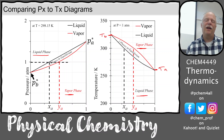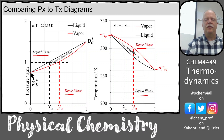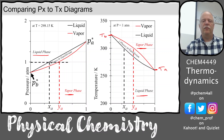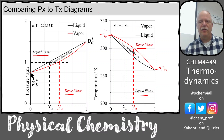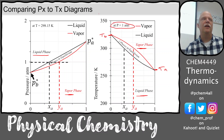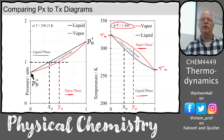I might really prefer the temperature-composition phase diagrams because they have boiling temperatures, which again this would be for a particular pressure. So these are all boiling points because this is the phase diagram at one atmosphere. So everything on there has a vapor pressure of one atmosphere for the mixture.